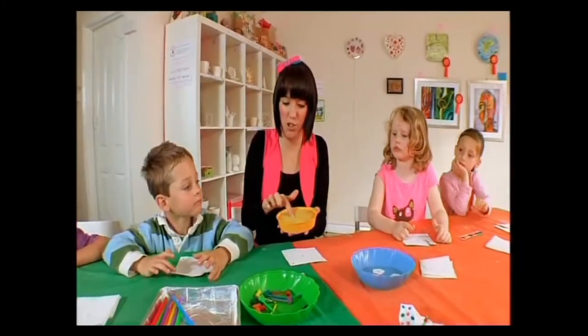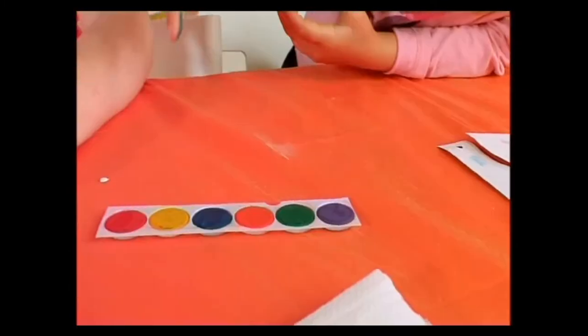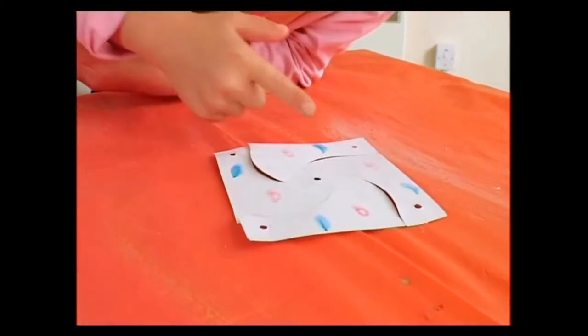You see this? This is a little soggy sponge. So we're going to dab our fingers in it and then you can dab onto one of the colours you like. And then do some lovely fingerprints.